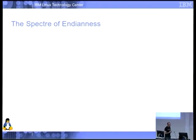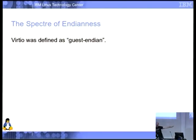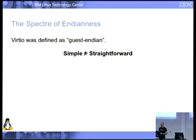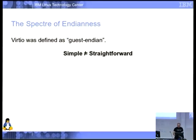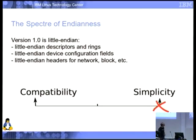The worst one however is the specter of endianness. VirtIO was defined as guest-endian because I'm brilliant. What could be simpler? You're writing a guest driver, don't worry about endian — the host obviously knows what endian you are. It turns out simple is not the same as straightforward. Straightforward is what I expected, and I actually said in the beginning that we would be straightforward. Not only does this cause an FAQ, but the balloon driver got it wrong and had to say 'these fields are always little-endian despite the convention.' So screw it — little-endian everywhere. Little-endian for the descriptors and the rings. If you're ARM or x86 little-endian, there's no change.